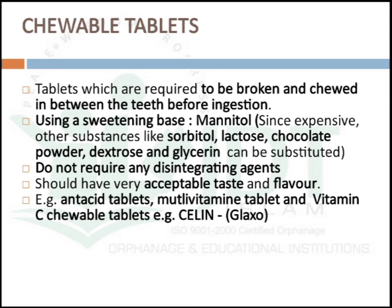Chewable tablets, as the name indicates, are required to be broken and chewed between the teeth before ingestion. A sweetening agent is used — usually mannitol, but due to its expense, substances like sorbitol, lactose, chocolate powder, dextrose, or glycerin can be substituted. Chewable tablets do not require any disintegrating agent since they are chewed and broken before ingestion. Examples are antacids like Gelusil and Digene tablets, multivitamin tablets, and chewable vitamin C tablets.